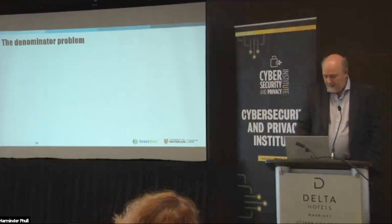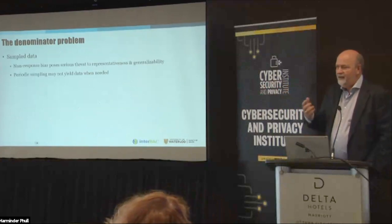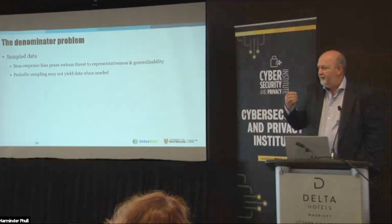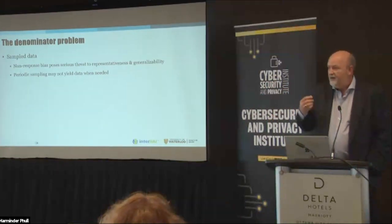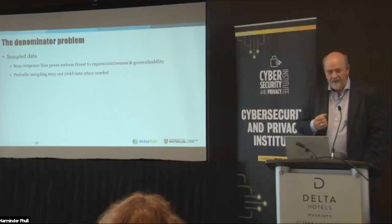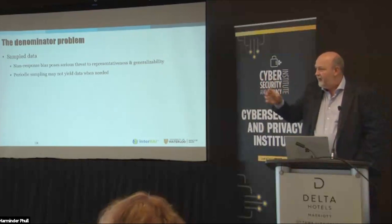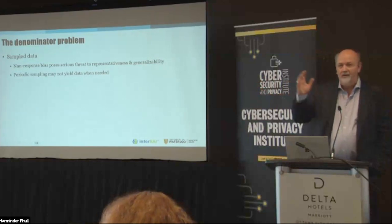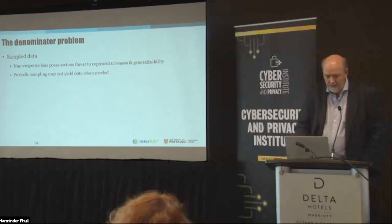The next example is what I call the denominator problem. In survey sampling or population sampling, the big problem is non-response bias, where you end up with an unrepresentative sample. If you have a 12% or 20% response rate, you're probably not going to be able to make generalizations to the general population — that's the bane of the existence of survey researchers. Sometimes people do periodic samples for different time periods, and those can be good if you have a good response rate, but you might miss some important event — like not having data at the start of COVID.